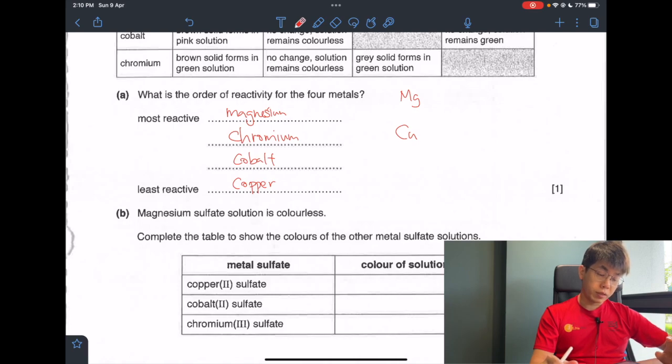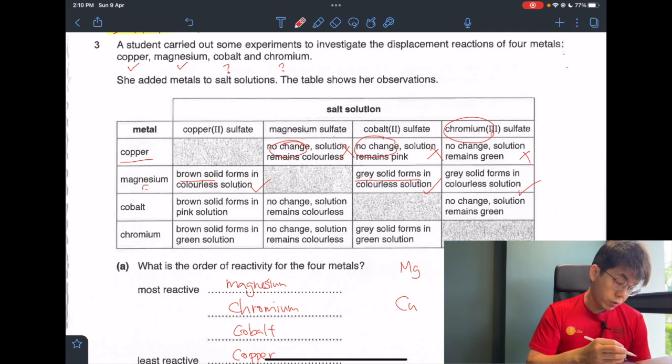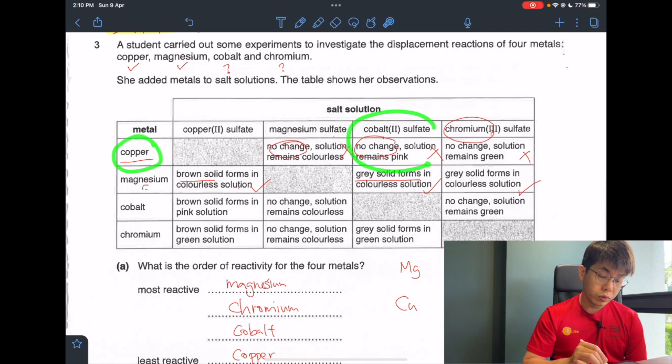Magnesium sulfate solution is colorless. Complete the table to show the colors of the other metal sulfates. We are not really expected to know, so we have to look at the table. We know that copper cannot displace any of these reactions, that means there will be no reaction. When I add copper to cobalt sulfate, you see that there's no change and the solution remains pink. That means cobalt sulfate is originally pink.